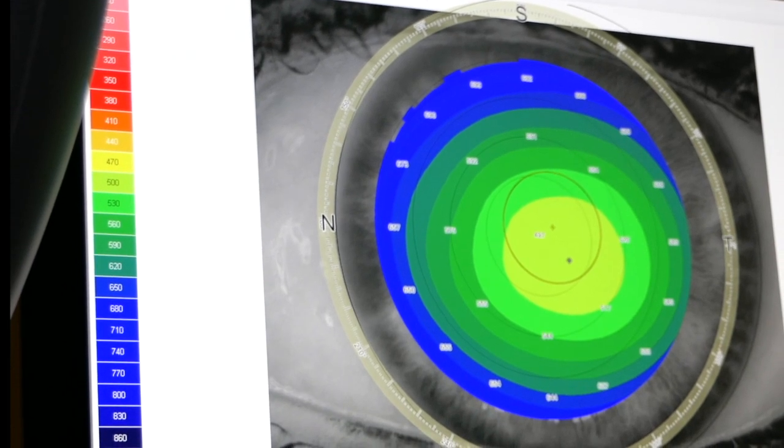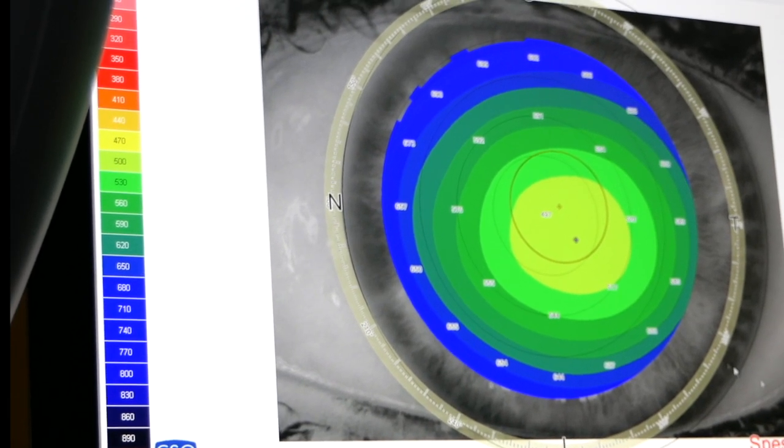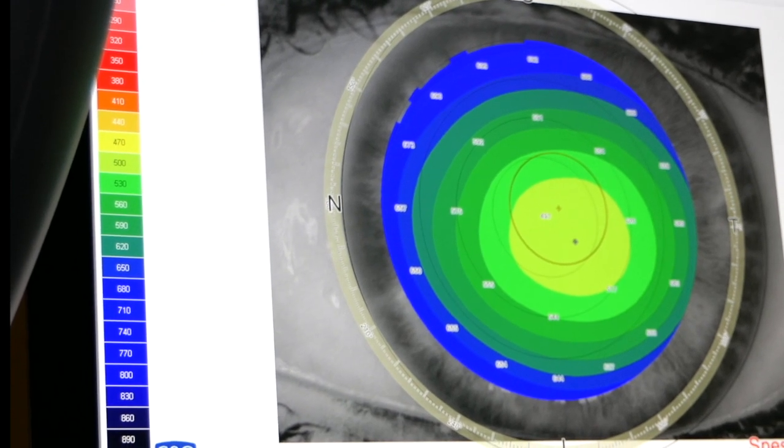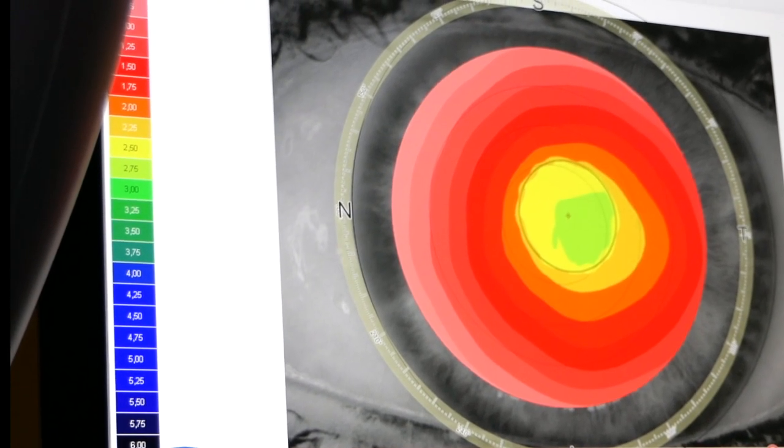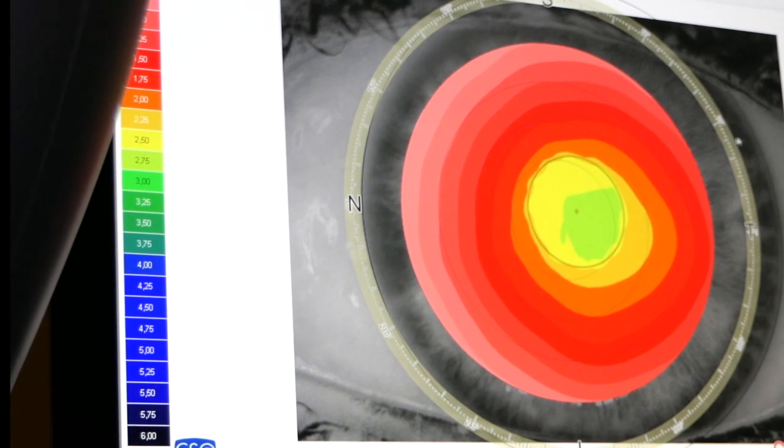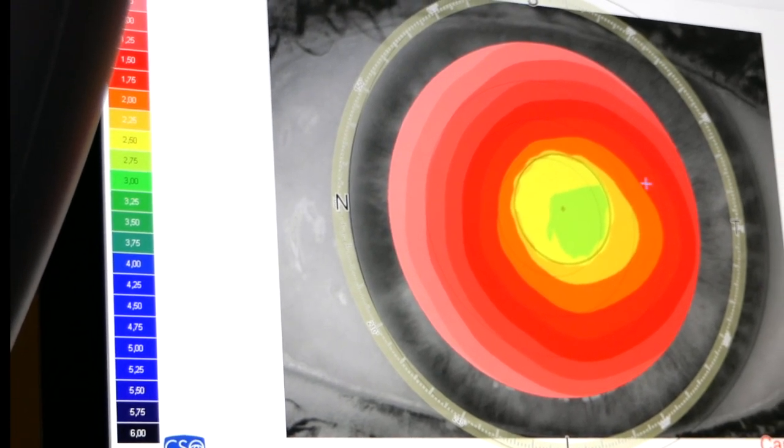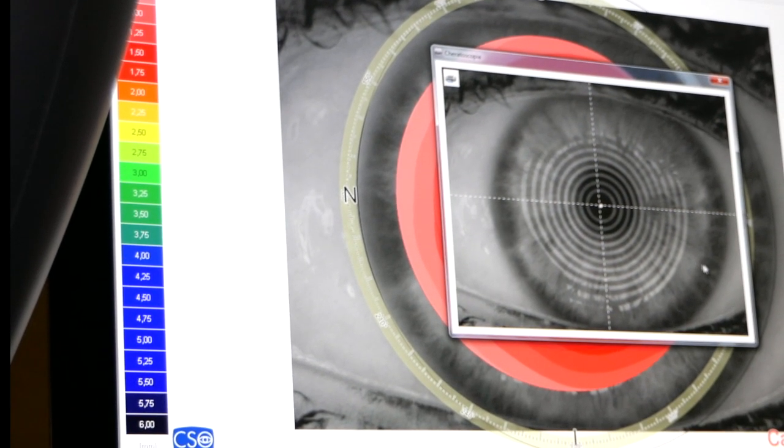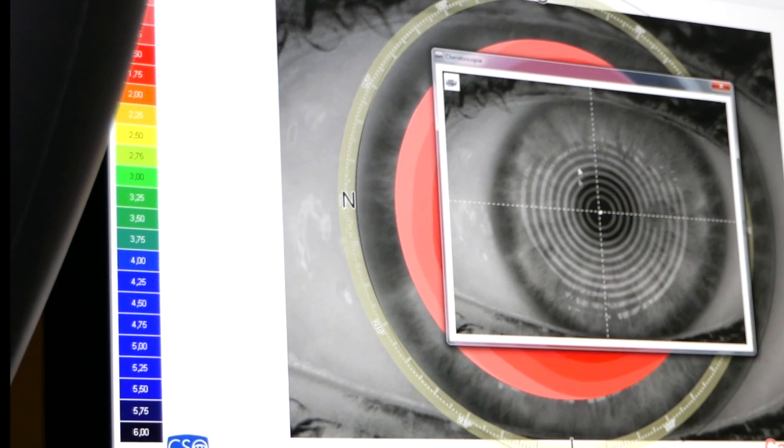This is very important because the corneal thickness is one of the parameters, together with the curvature and relative height of the cornea, to determine whether the cornea itself is healthy or sick. Thin corneas may hide a pathology such as keratoconus, while two thick corneas may hide a corneal endothelial disease.